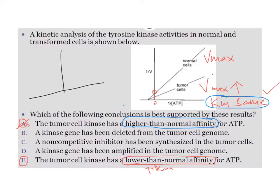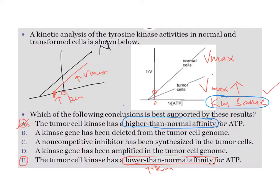To show what increased Km would look like: if I draw the normal cell kinase and then tumor cell kinase with increased Km, that line would be nearer to zero on the x-axis, because anything nearer to zero indicates an increase in Km. That kind of line is also not seen in the given question, so option E is also incorrect.